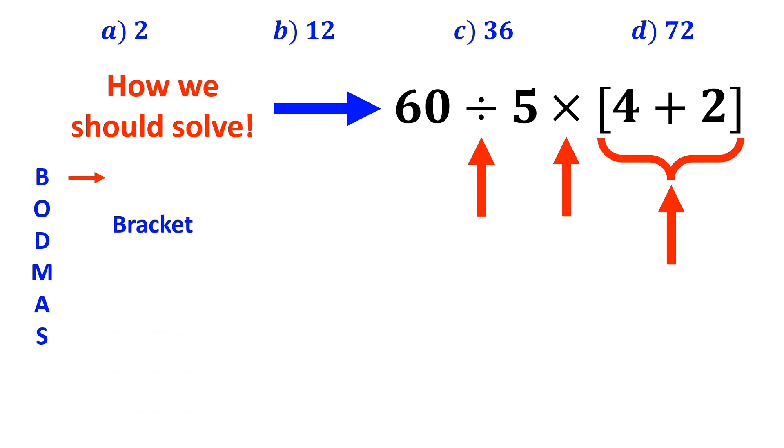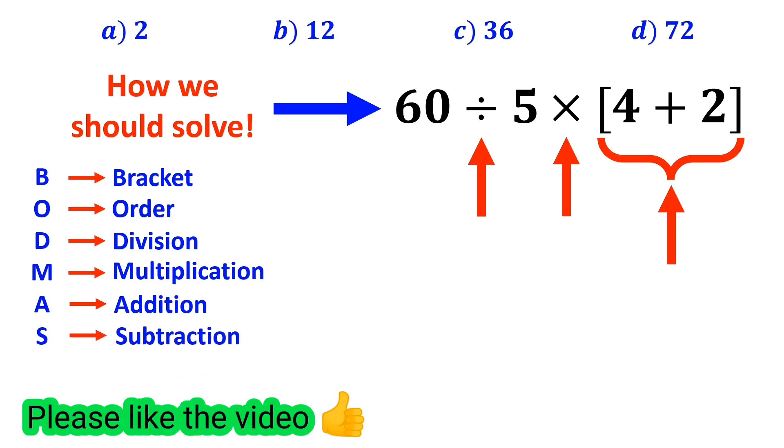In this rule, B stands for bracket, O stands for order, D stands for division, M stands for multiplication, A stands for addition, and S stands for subtraction. We need to perform these operations in order from top to bottom.